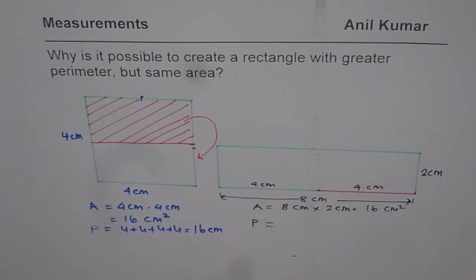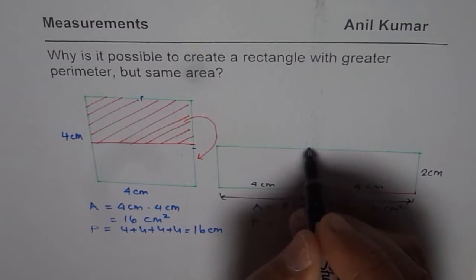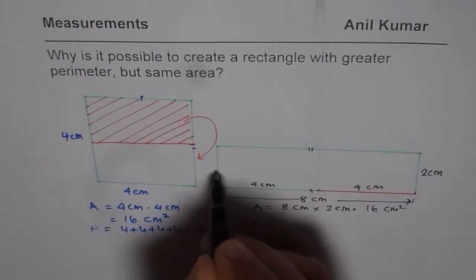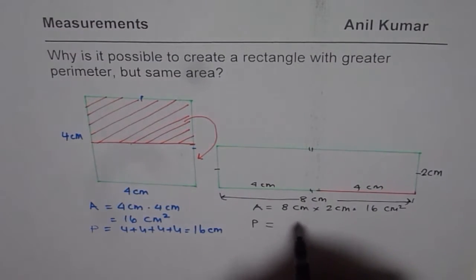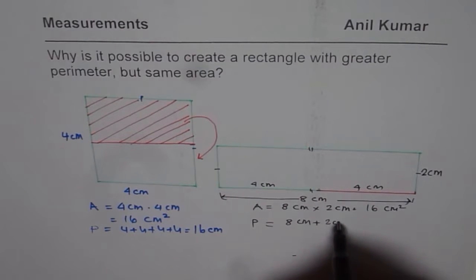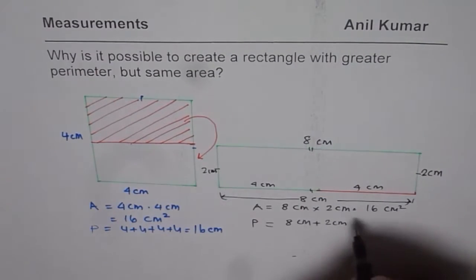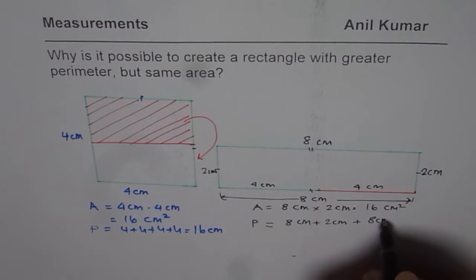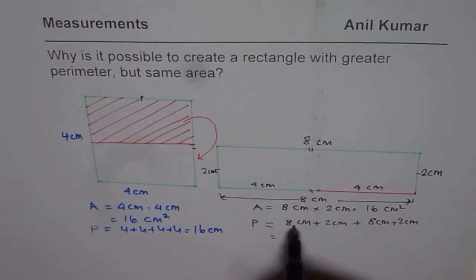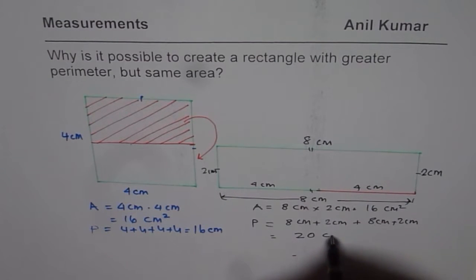But what happens to perimeter? Now, since these 2 sides are equal and these sides are equal, we have 8 centimeter plus 2 centimeter. And this is also 8. 8 centimeter and 2 centimeter. So, we have plus or we can multiply by 2. 8 centimeter plus 2 centimeter. What do we get? 8 plus 2 is 10, 10 plus 10 is 20. So, we get 20 centimeters. Perimeter has increased from 16 to 20.